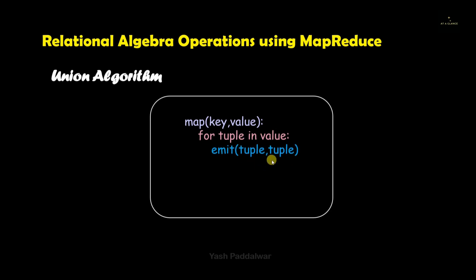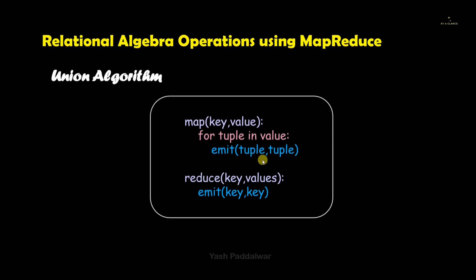First, inside the map task we will be iterating over all the values in the relation and we'll store each value in the temporary variable tuple, then we'll simply emit the key values in the form of tuple comma tuple. Under the reduce section we'll be just emitting the key part of the tuple that we have collected from the map task. It is the easiest operation that can be performed using the MapReduce algorithm — you just have to collect all the distinct values and then emit the key part of it.